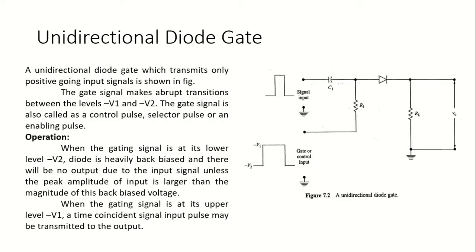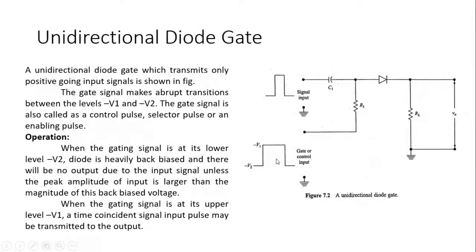When the gating signal is at its lower level (minus v2), the diode is heavily reverse biased and does not conduct, acting as an open switch — no output signal appears. There will be no output at all since minus v2 is a very large negative value, unless the peak amplitude of the input is larger than the magnitude of this back-bias voltage. For example, if minus v2 is minus 10 and the input is plus 15, superposition gives plus 5 and the diode turns on.